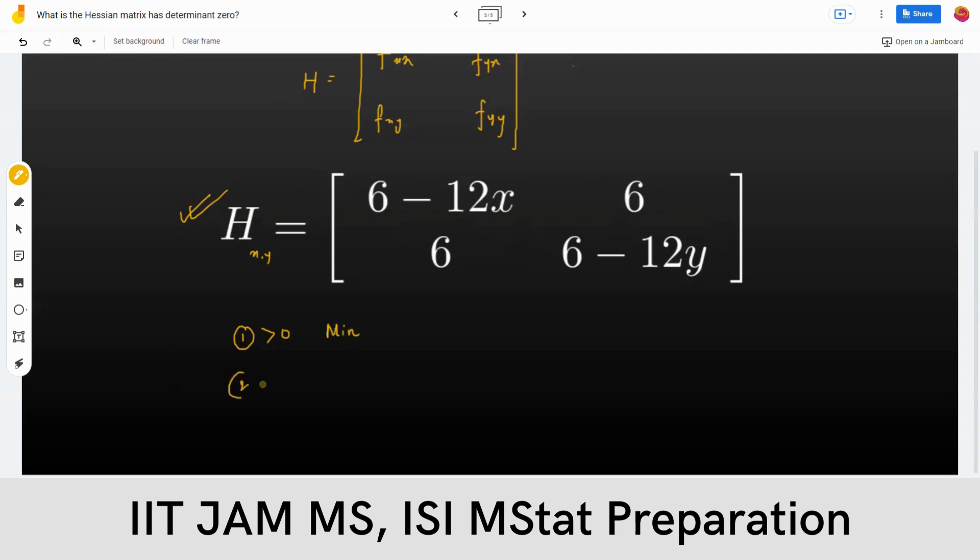If it has negative eigenvalues, that point is the maximum. If it has nonzero eigenvalues, both positive and negative, but nonzero, then it's a saddle point.